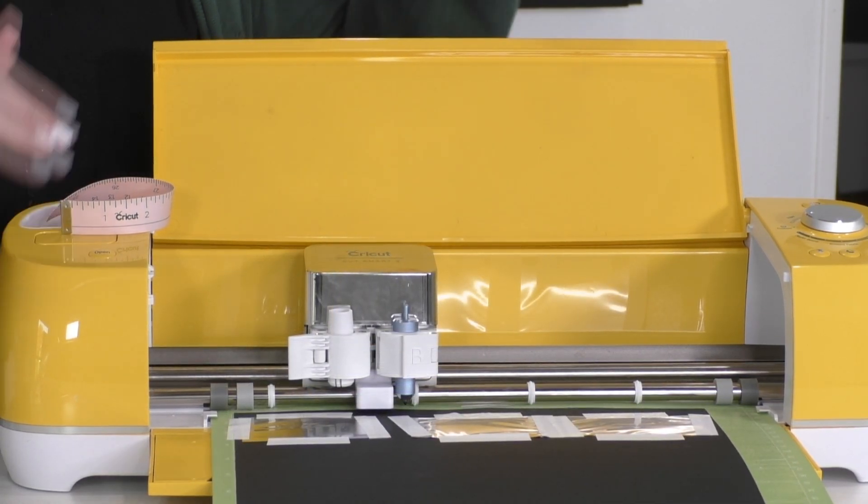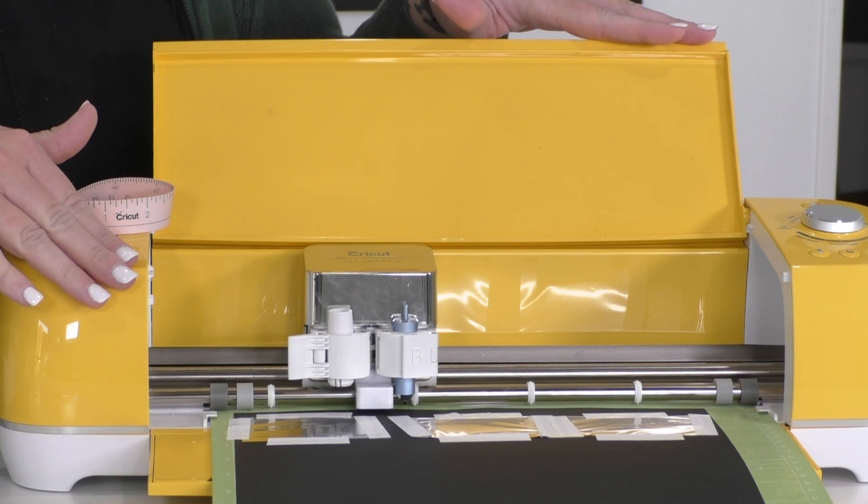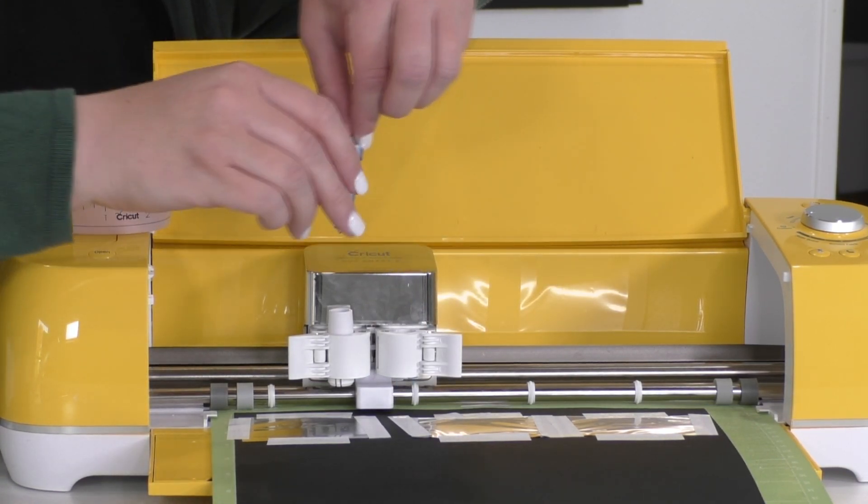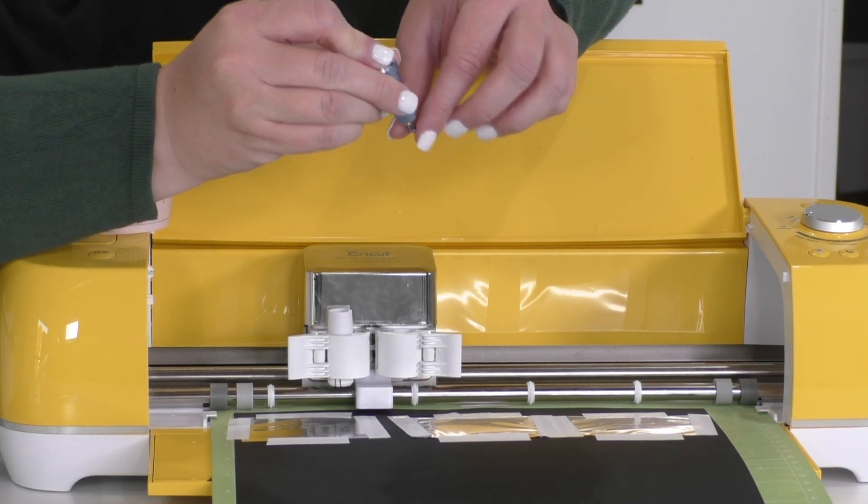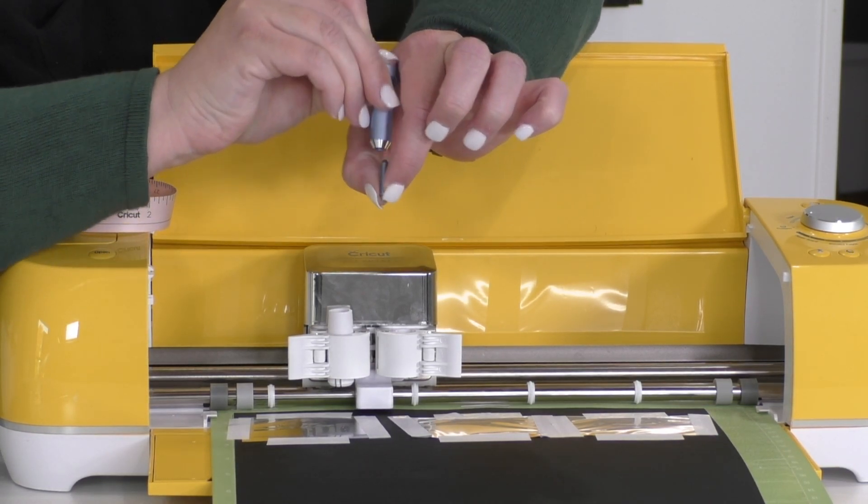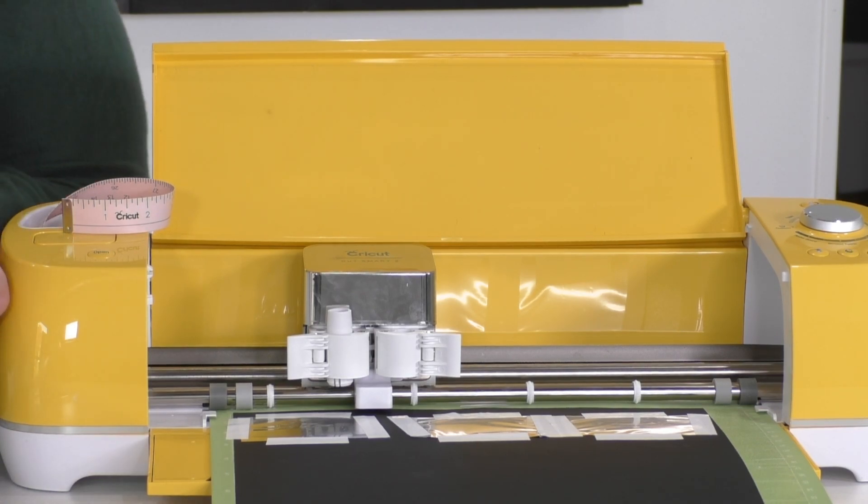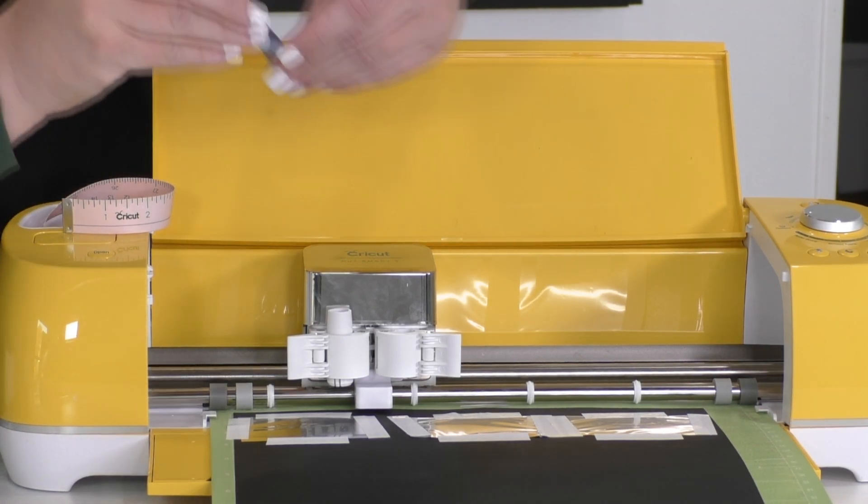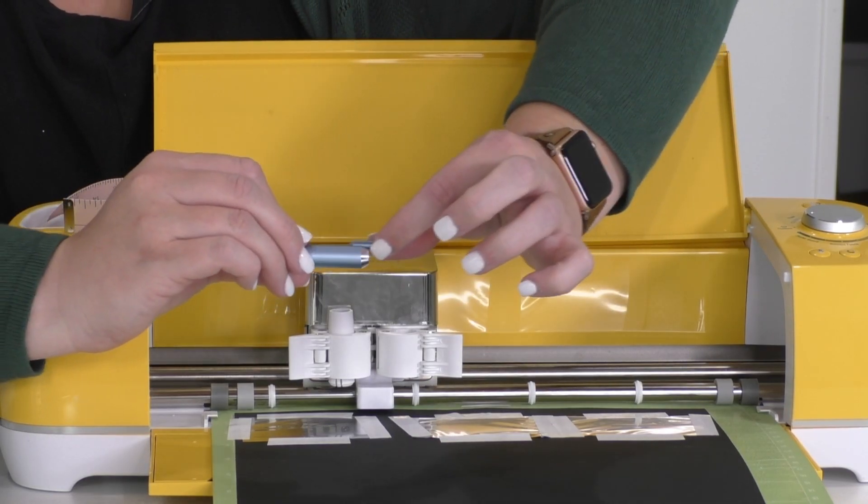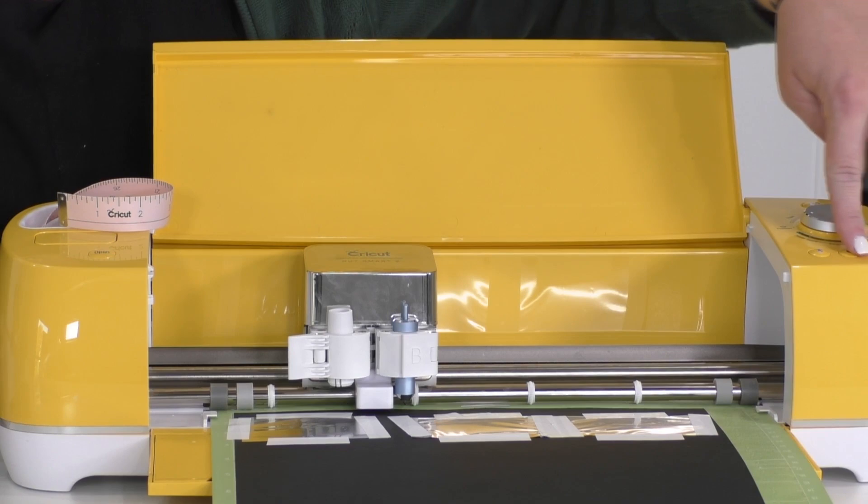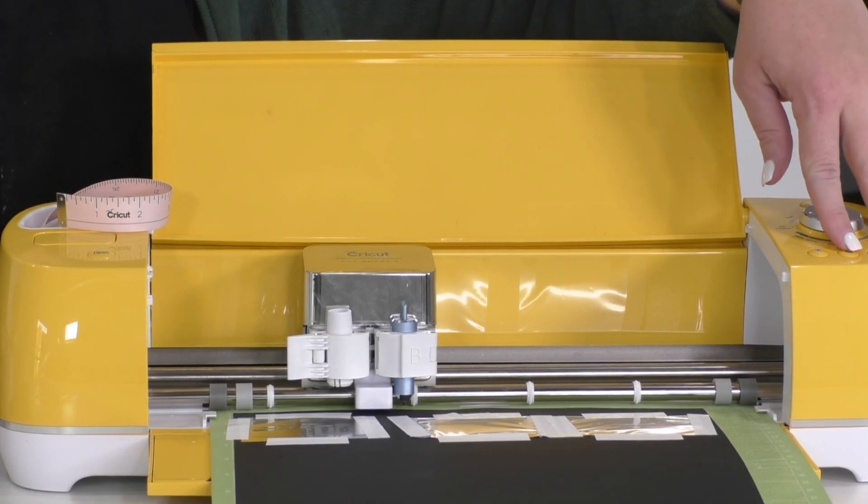Now that that is finished, do not unload your mat. It's very important that you do not unload your mat, but go ahead and unload your foil transfer tool, and then you can remove that tip there. And we're going to go ahead and insert our medium tip because that's what it's prompting us to do. So I just insert it just like that. And then we'll put it back in the clamp and press the flashing Cricut button again.